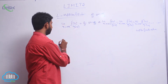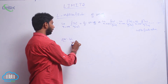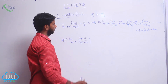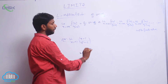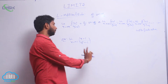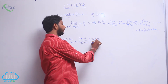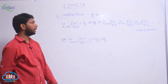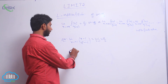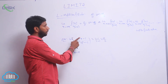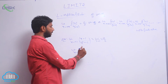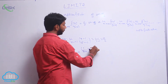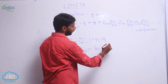For example: limit extends to 1 of (x - 1)/(x² - 1). Substituting gives (1-1)/(1-1) = 0/0 form. Apply L'Hôpital's Rule — limit extends to 1: derivative of numerator is 1, derivative of denominator is 2x, giving 1/(2×1) = 1/2.